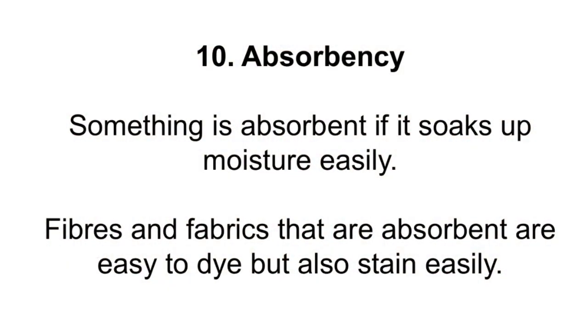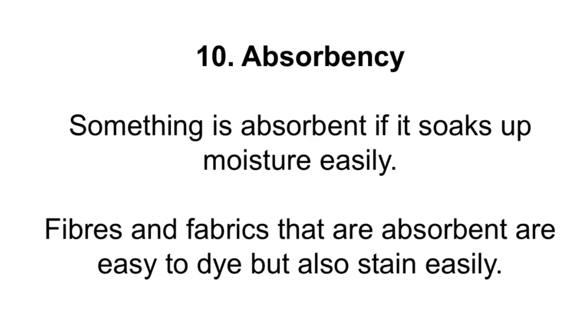Absorbent materials like paper towels soak up moisture very easily. Normal white paper isn't as absorbent — water sits on the surface for a while before soaking in — whereas paper towel soaks up water really quickly. This is why paper towels are great for cleaning up mess. Natural fibres like wool and cotton are really absorbent, which is why it's easy to dye them in different colours. Synthetic fibres — man-made fibres like polyester and lycra — are not absorbent.